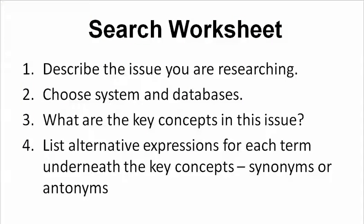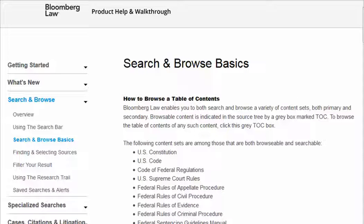Once you've decided what to look for, where to look for it, and how to look for it, you can start to think of the words to look up in an index or to include in a full-text search. Start broadly with key concepts and terms, cast a wide net to see what you retrieve, and then begin to eliminate documents that are outside your scope. Not every search system treats search words the same, especially when you are using a system you aren't familiar with. It can be very helpful to check system help screens to see how that system processes your search.